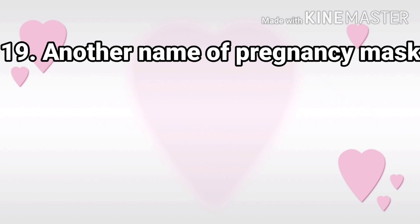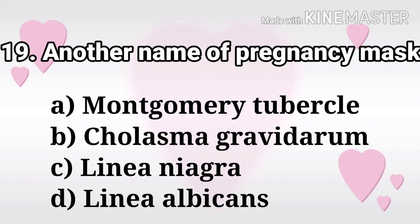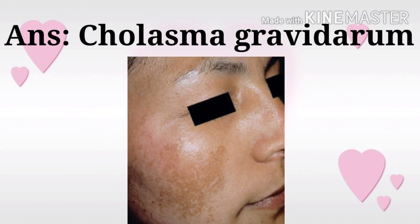Next question: Another name for pregnancy mark. The options are Montgomery tubercles, chloasma gravidarum, linea nigra, and linea albicans. The answer is chloasma gravidarum.